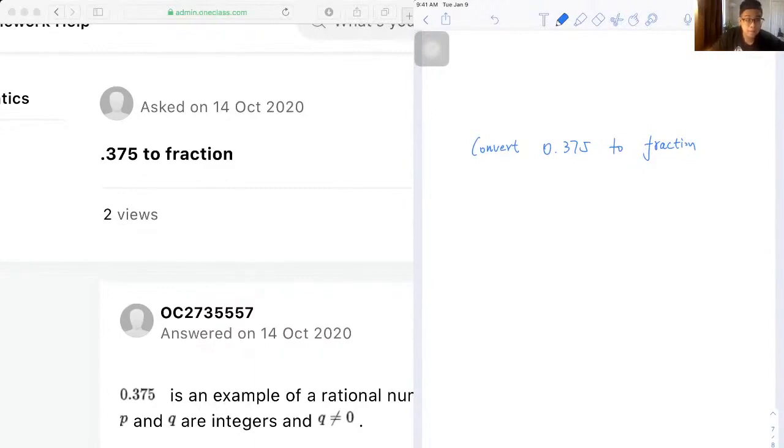Alright, so this is step one. We need to count the number of decimal places to the right of the decimal point.